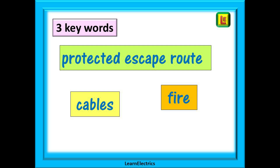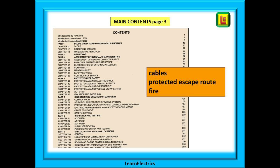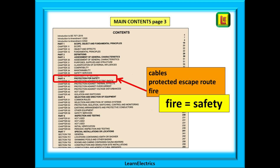The key words are: cables, protected escape routes, and fire. Let's take those three key words and examine the main contents page of the regulations on page three. Which part of the regs might they apply to? To me, protected escape routes and fire both indicate safety, so the question is about safety. Looking at the contents: Part 4 — Protection for Safety.